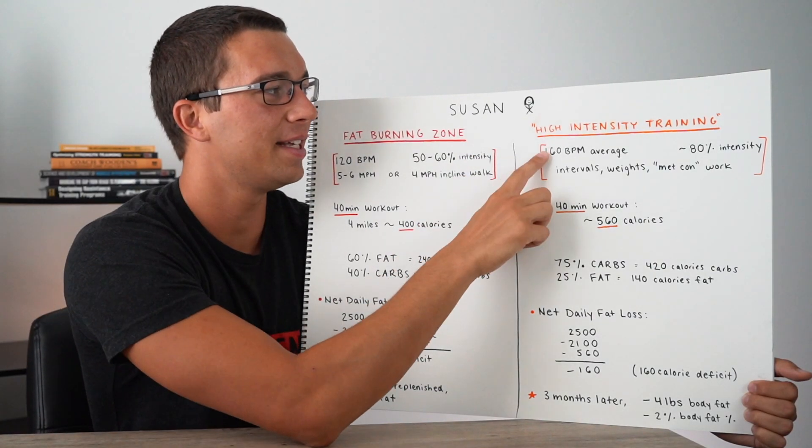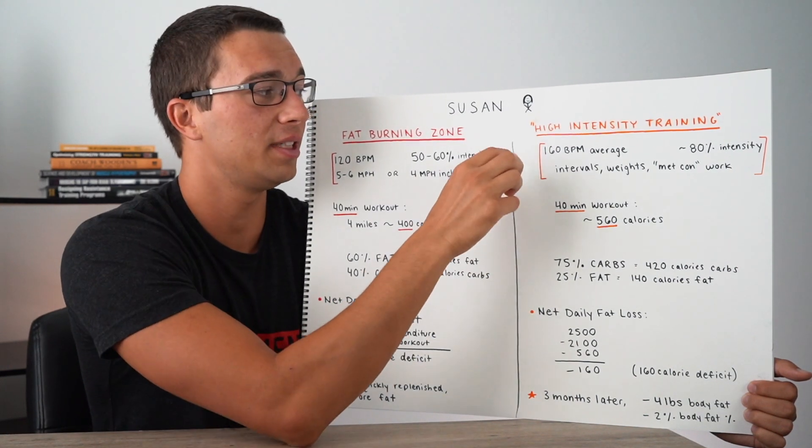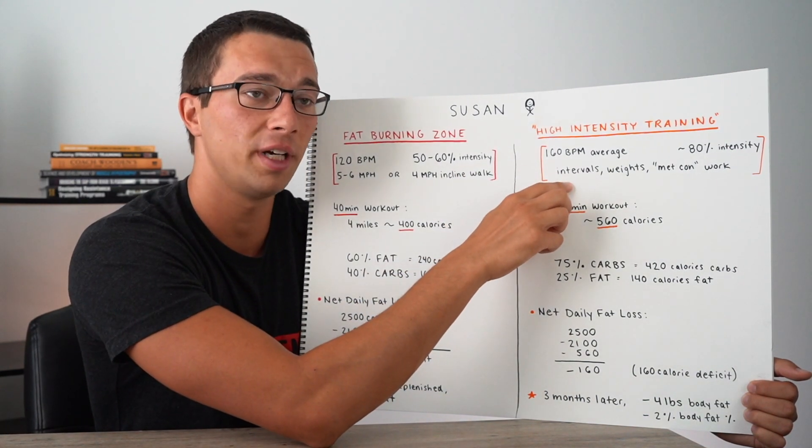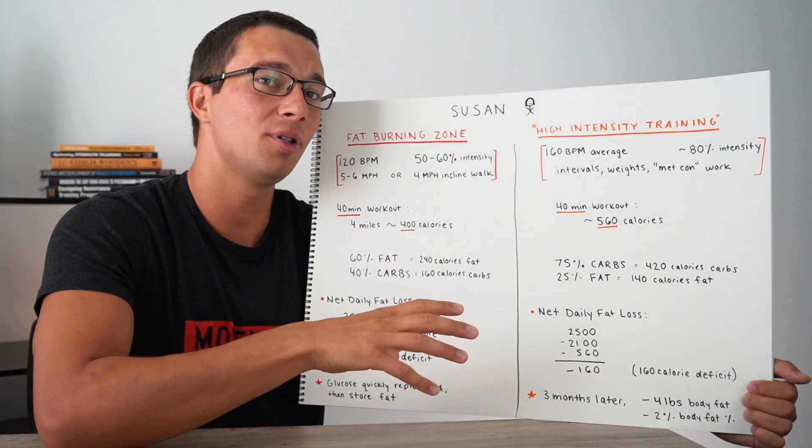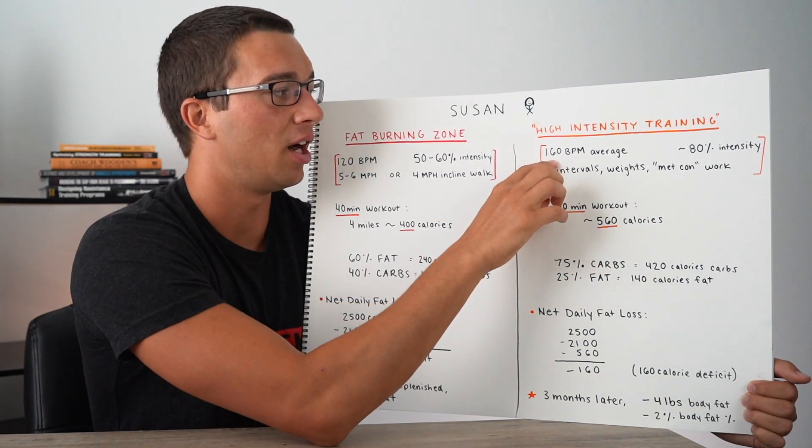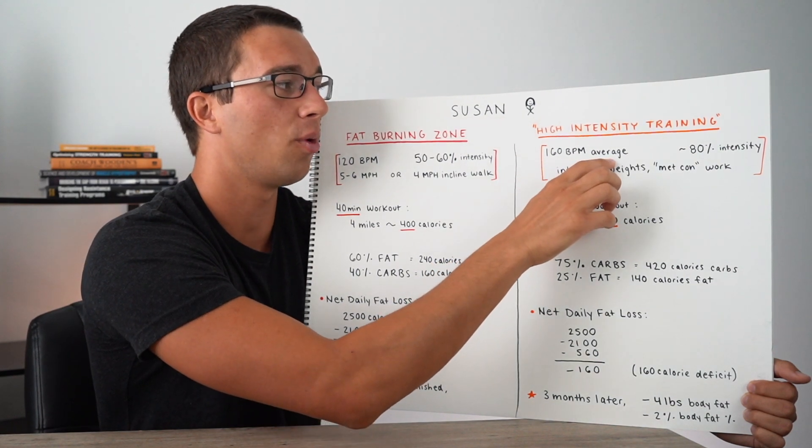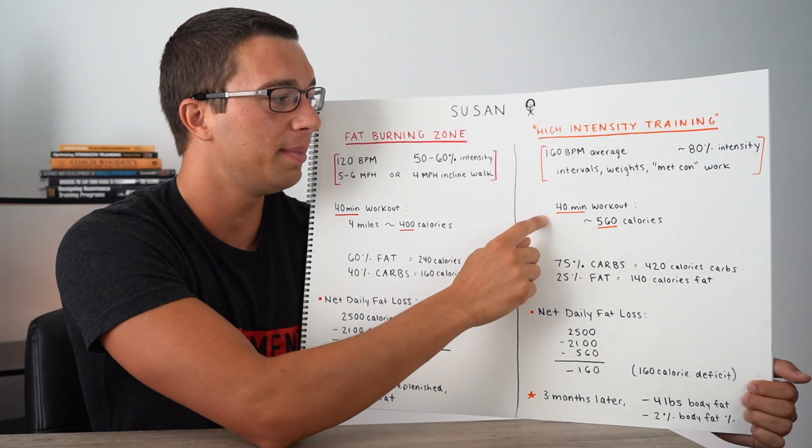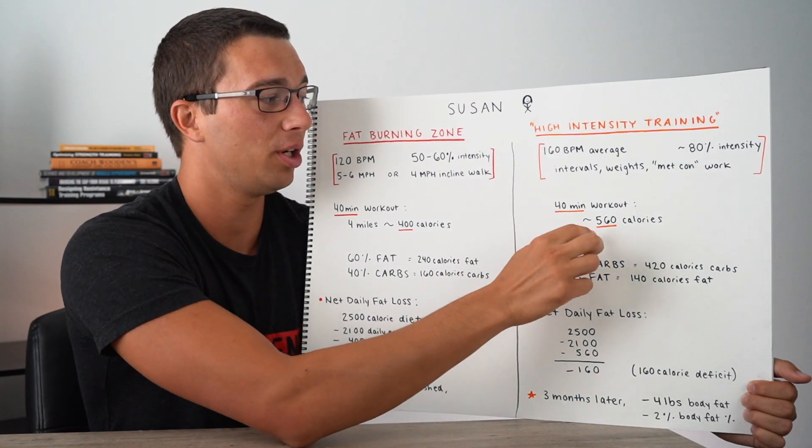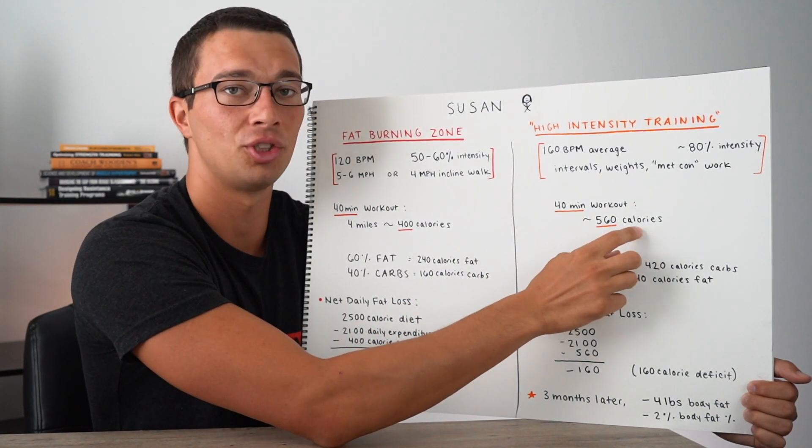All right, so now let's go ahead and compare that to the high intensity training. So let's just say Susan did high intensity training that could be interval training, it could be weight training, it could be Metcon training, but the type of training that she did, she averaged 160 beats per minute throughout her workout. This works out to about an 80% intensity, and for a 40 minute workout, we can estimate that she burned about 560 calories total.